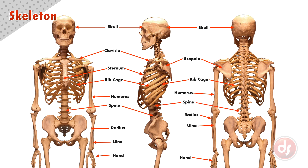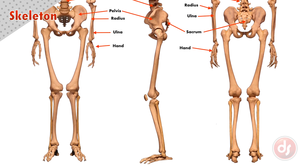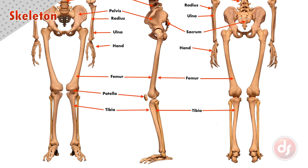Our spine is the central core of our body, made up of individual vertebra. At the bottom of the spine is our sacrum. Attached to the sacrum is the large bowl-like pelvis. Our upper leg bone is the femur, attaching to the pelvis. Our kneecap is called the patella. The tibia is the big bone in the lower leg, and the fibula is the smaller bone in the lower leg, and these both connect to the foot below.